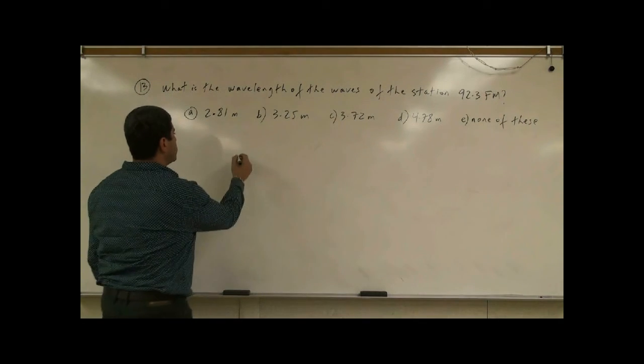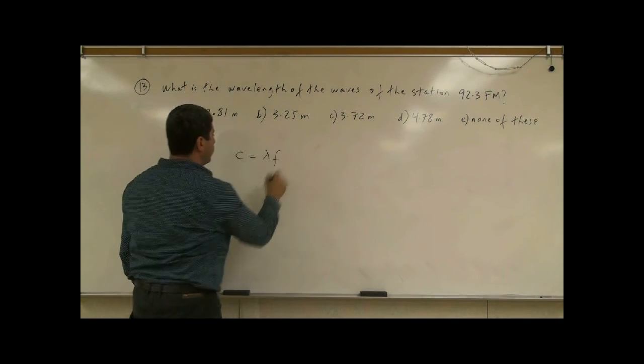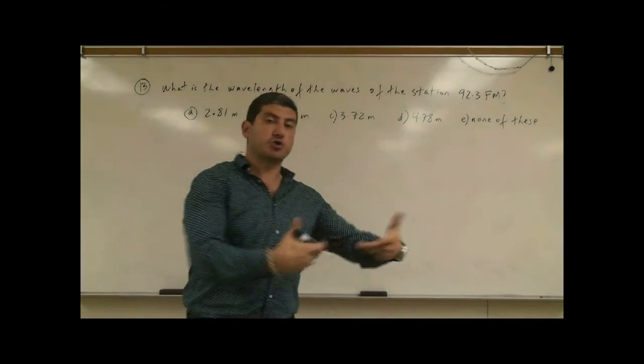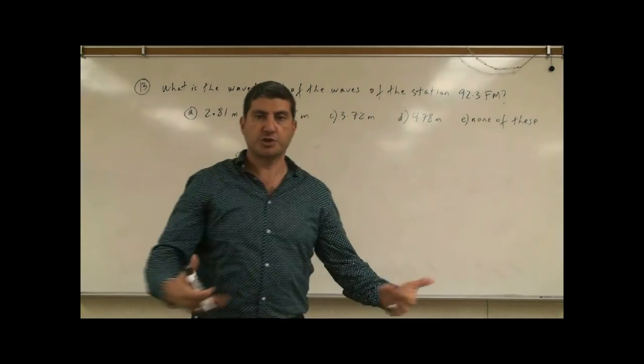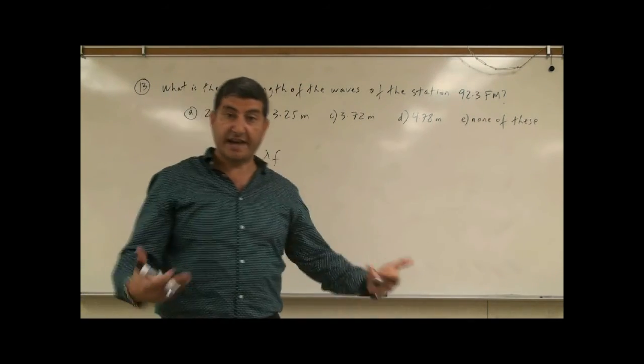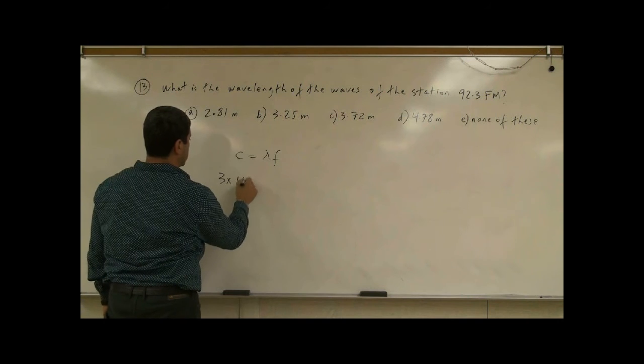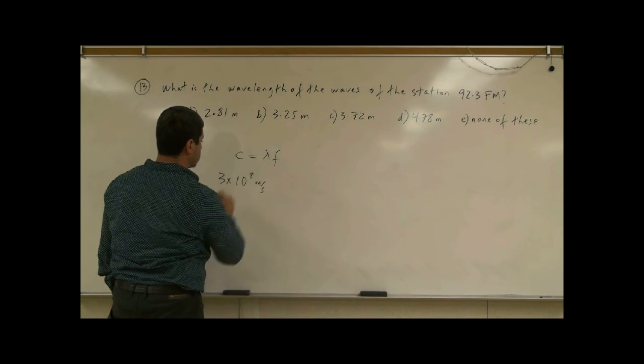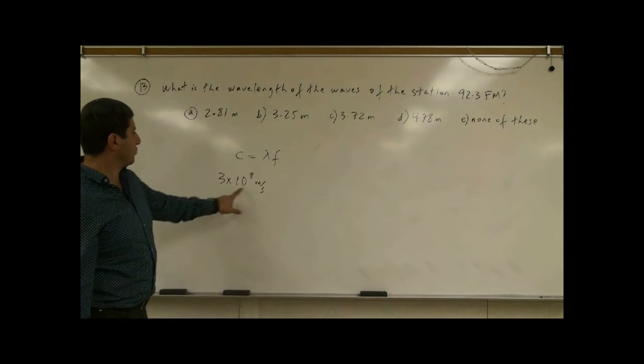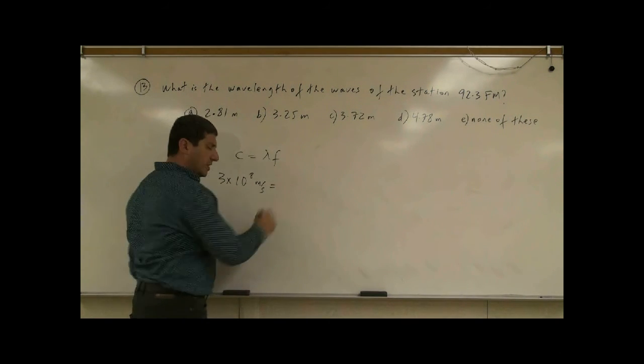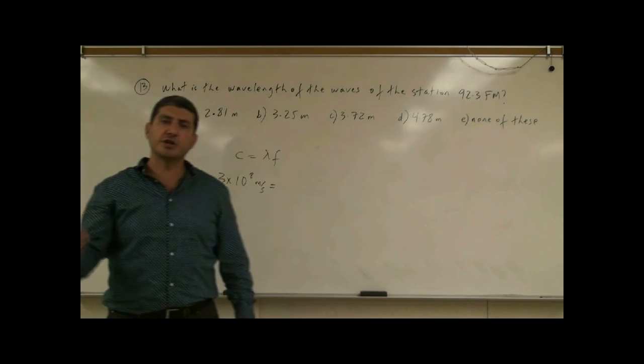So we're going to use the equation C is lambda F. C is the speed at which all electromagnetic waves travel, which is known as the speed of light in vacuum. In vacuum, the speed of light is 3 times 10 to the 8 meters per second. So that would be their speed in vacuum of all electromagnetic waves, and radio waves are one example of an electromagnetic wave.